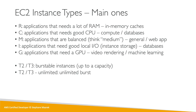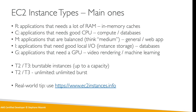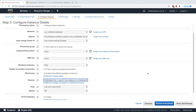If you over-abuse that burst, you lose the burst and your capacity. There's also T2/T3 Unlimited, which gives you unlimited burst. In the real world, to choose the instance type you need, I suggest you use the ec2instances.info website — it is amazing. Let's go on it real quick.